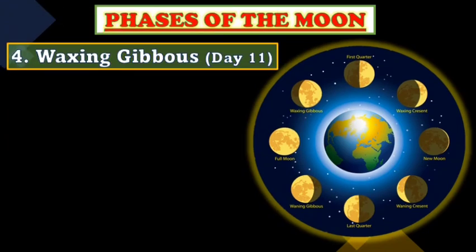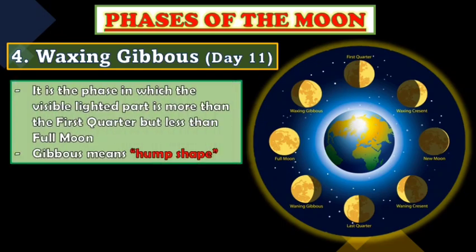Number four is the Waxing Gibbous phase on day eleven. As mentioned, waxing means getting bigger or larger. It is the phase in which the visible lighted part is more than the first quarter but less than the full moon. Gibbous means hump-shaped.